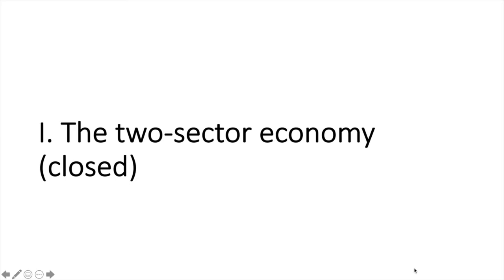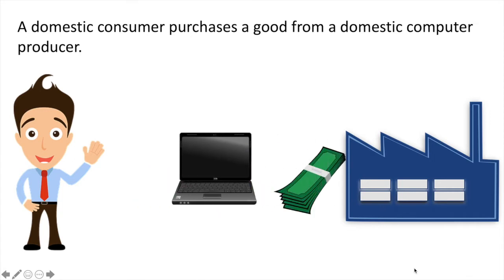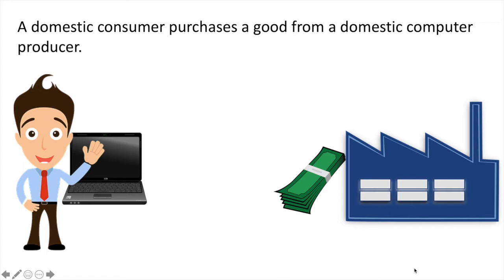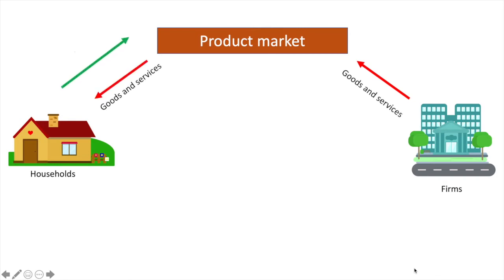Now we'll look at three different circular flow models, each building on the previous one. The first is the two-sector economy, which consists of households and firms. In this case, the economy is closed as there is no trade with the rest of the world. Suppose a domestic consumer purchases a good from a domestic firm — the consumer receives the product and the firm earns revenue. Firms sell goods and services in the product market, and consumer spending becomes business revenue. What is spent on goods and services equals the revenue received by firms selling those goods and services.